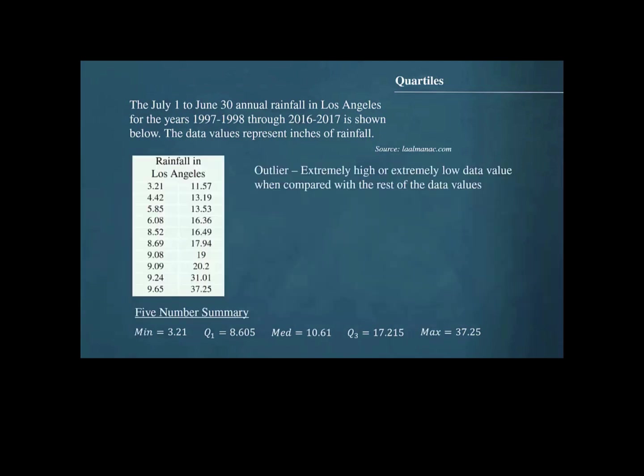Sometimes a data set might contain what is called an outlier. An outlier is an extremely high or extremely low data value when compared to the rest of the data values. One method for finding outliers in a data set utilizes a measure called the interquartile range, which is frequently abbreviated IQR.